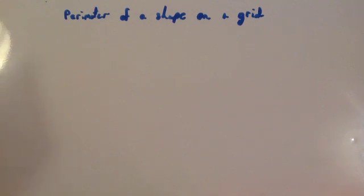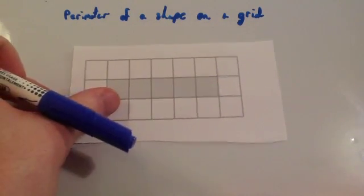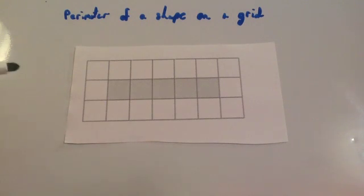In this video we're going to look at how to find the perimeter of a shape on a grid. Here's an example of a rectangle that is on a grid, and we're going to find out the perimeter of this shape.